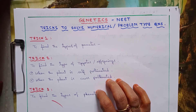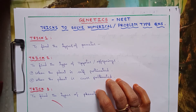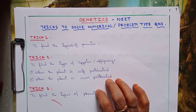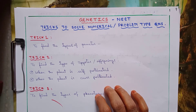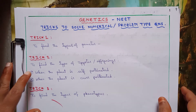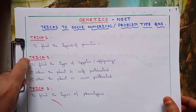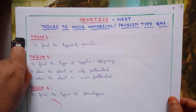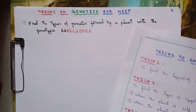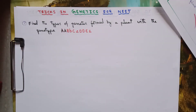Hello students, in this video I am going to give you tricks to solve numerical-based or problem-based questions related to genetics. Let's see questions one by one and I'll give you tricks to solve those questions. First question is to find the types of gametes formed by a plant with a given genotype.